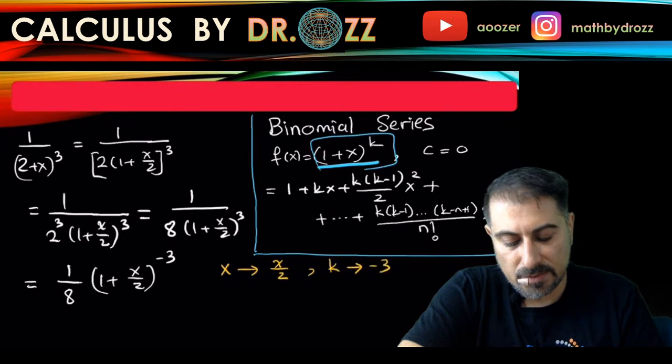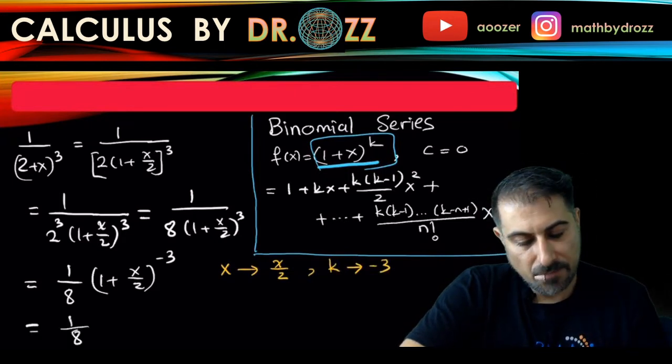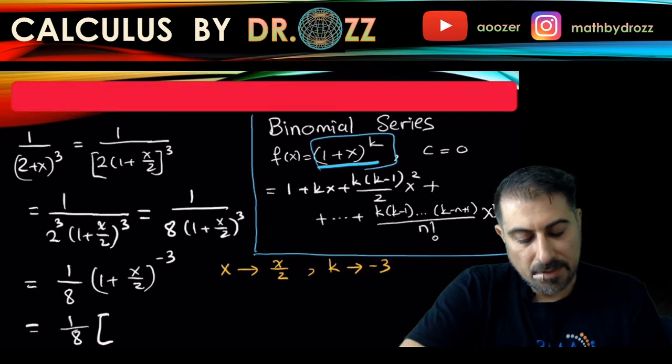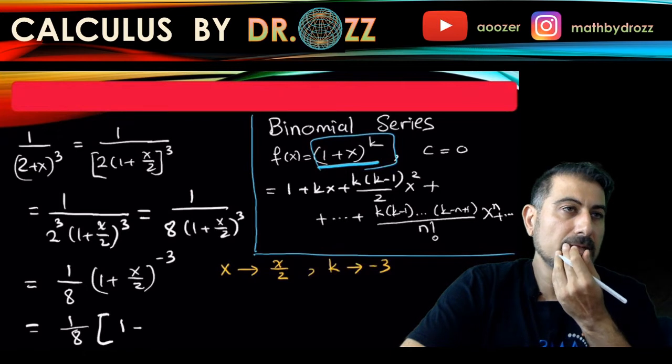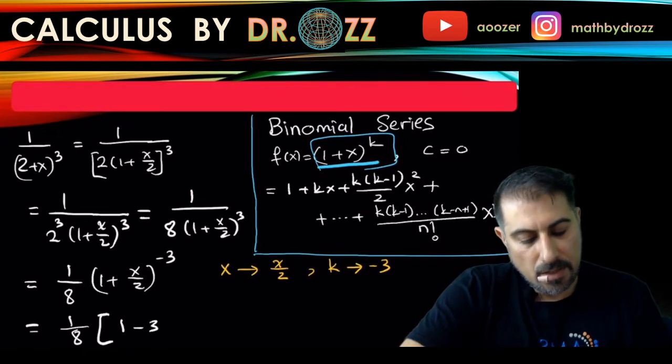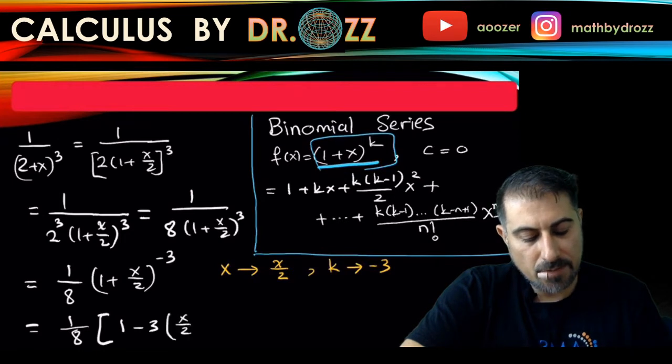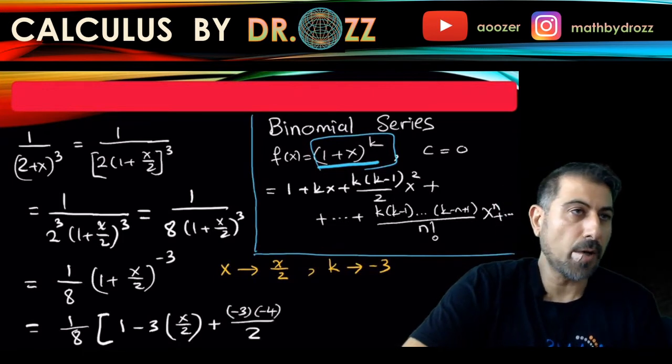So I can rewrite this as 1/8 times—the first term is always 1, the second term is negative 3 times x/2, and then plus negative 3 times negative 4 divided by 2 times (x/2) quantity squared.